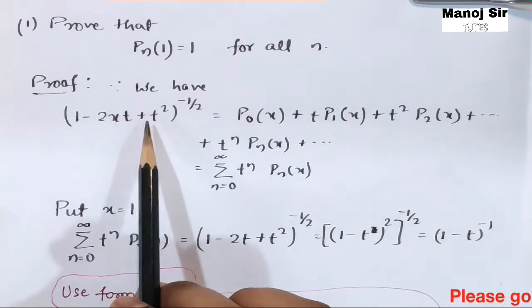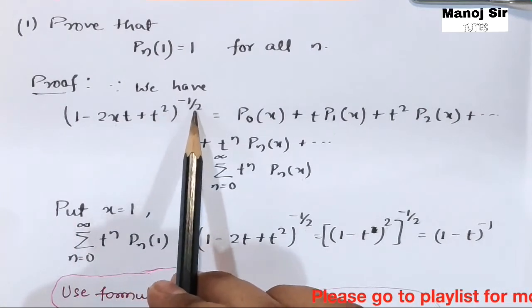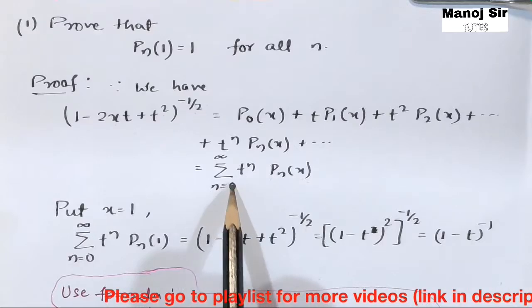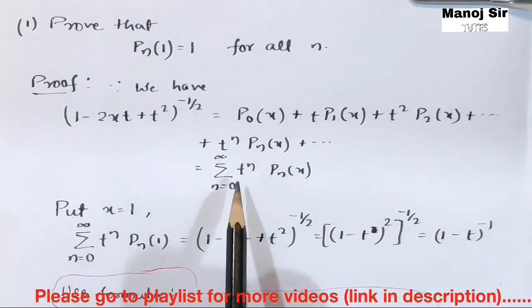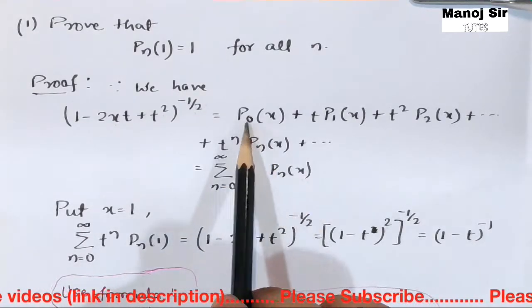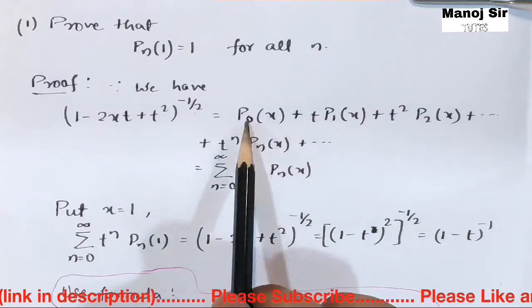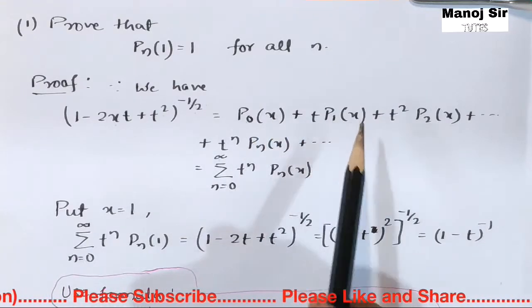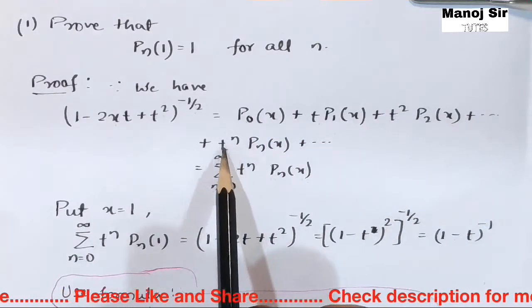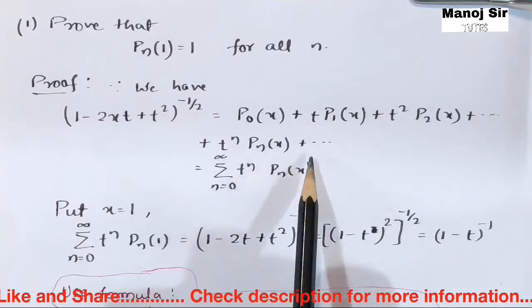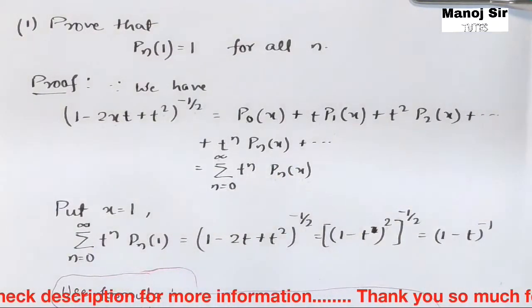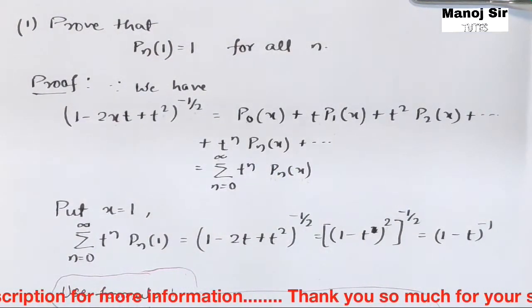We know that (1 - 2xT + T²)^(-1/2) can be written as the summation from n=0 to infinity of T^n times P_n(x). If we expand this, we get P_0(x) + T·P_1(x) + T²·P_2(x) + ... + T^n·P_n(x) + ...